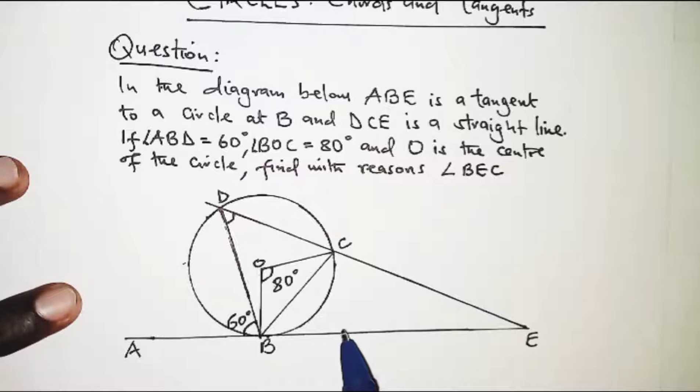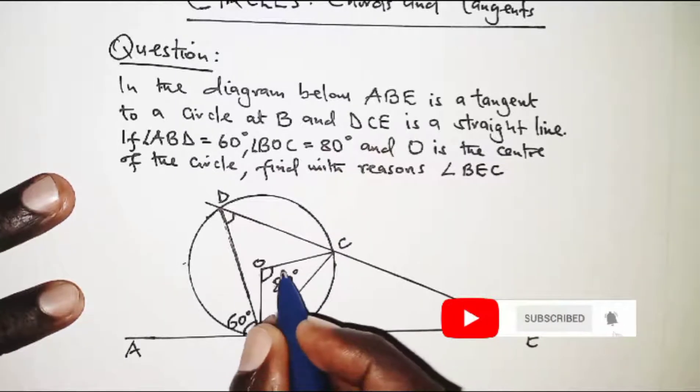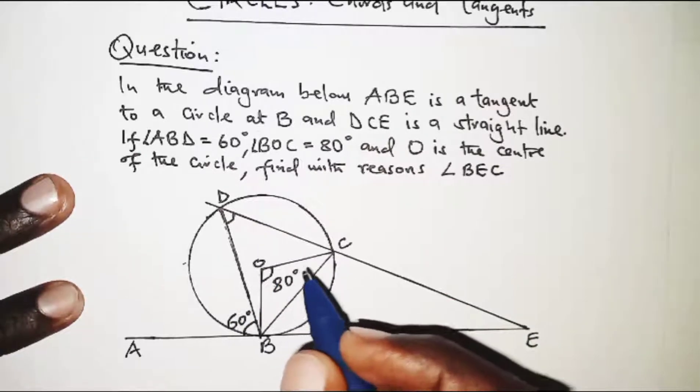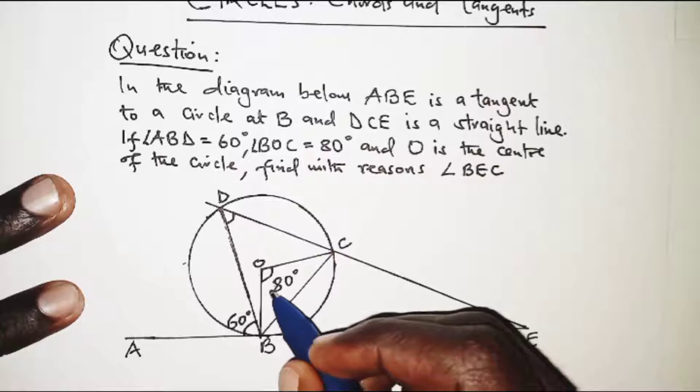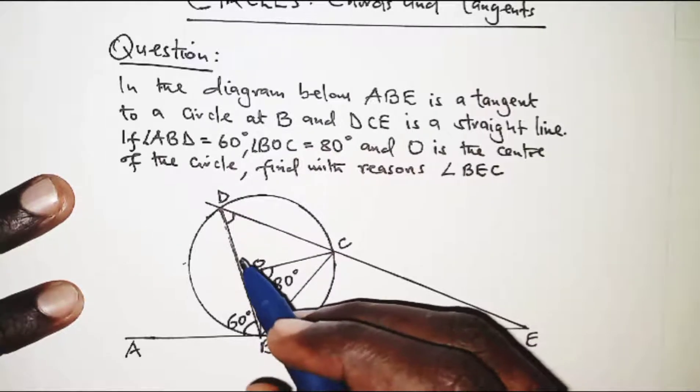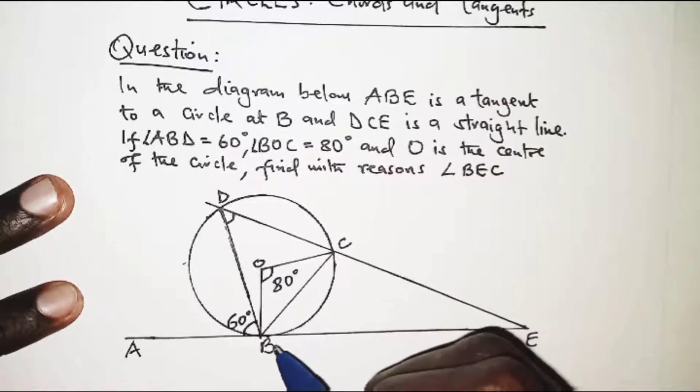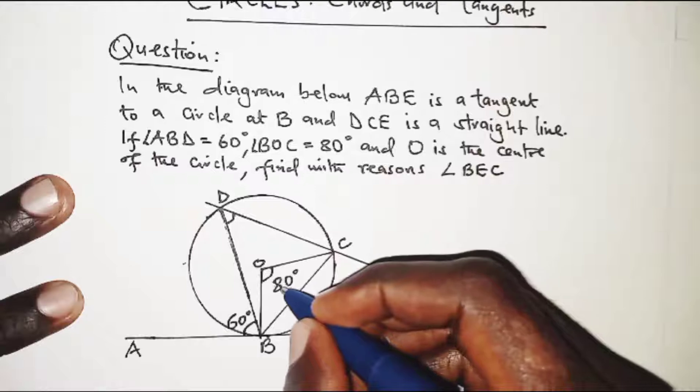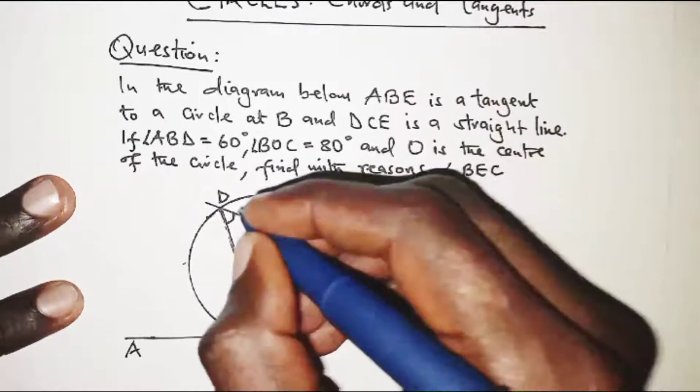The first thing we're going to do is use the angles already given to find the missing angles. If the angle subtended by chord BC at the center of the circle is 80, remember the property that states the angle subtended at the circumference by the same chord should be half the one subtended at the center. So if at the center we have 80, BC also subtends an angle at the circumference, and that is 40.